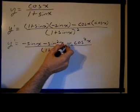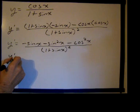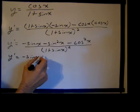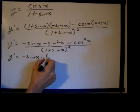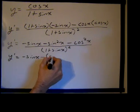If I factor out a negative here and a negative here, let's see what happens. So I have y prime equals negative sine of x minus, or minus 1 times, if I pull out a negative 1 from the sine squared, I get positive sine squared of x.